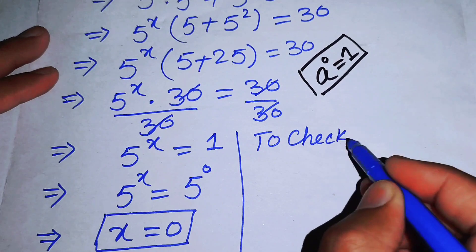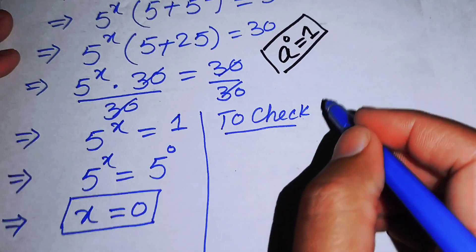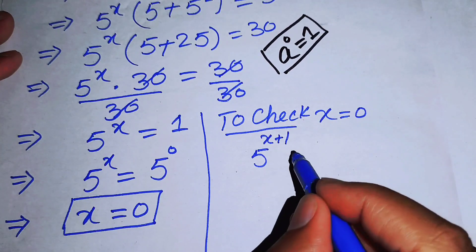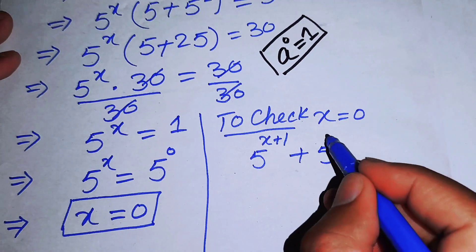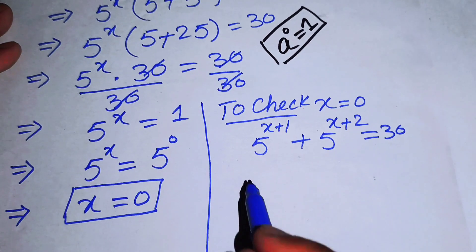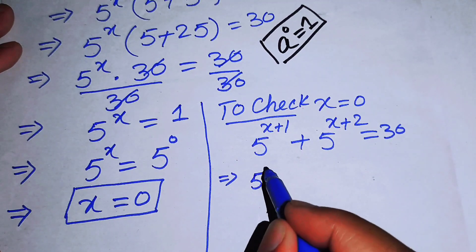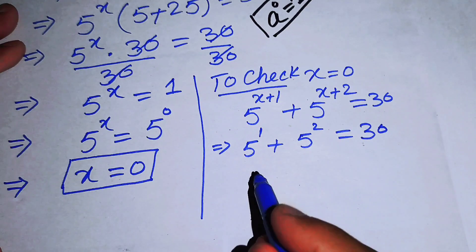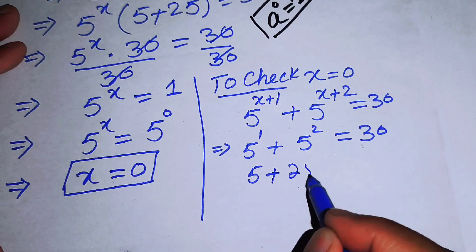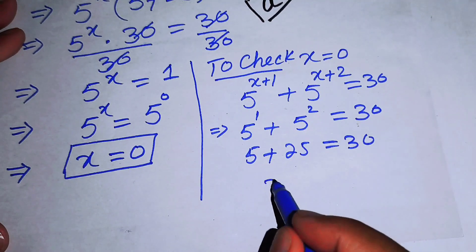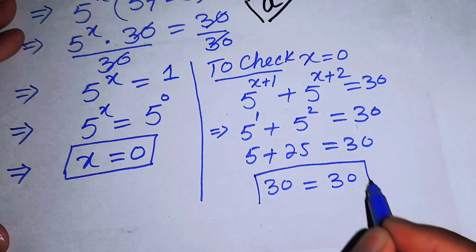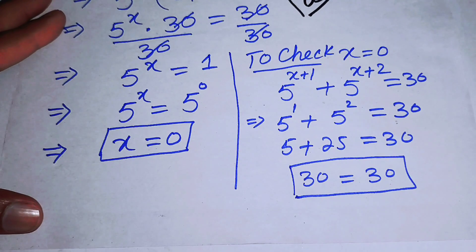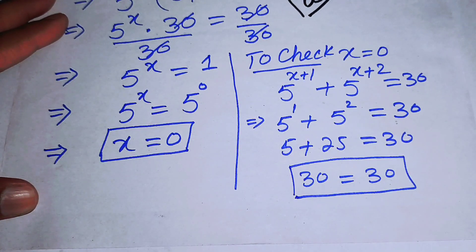Now we will verify our answer by substituting x equals 0 into the original equation: 5 to the power of x+1 plus 5 to the power of x+2 equals 30. Replacing x with 0 gives 5 to the power of 1 plus 5 to the power of 2, which is 5 plus 25 equals 30, confirming 30 equals 30. Therefore x equals 0 is the only solution.